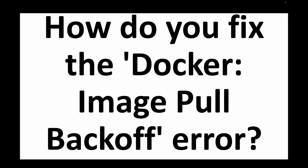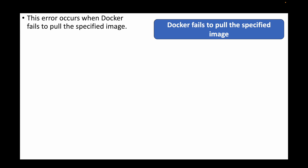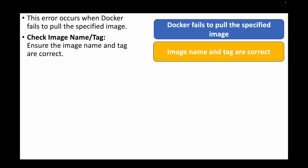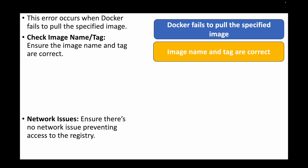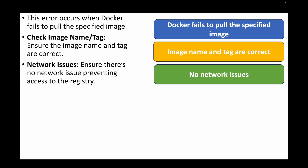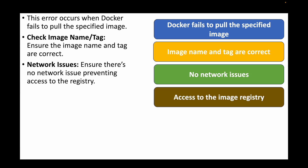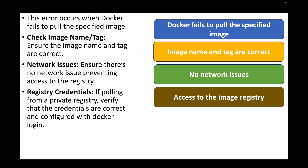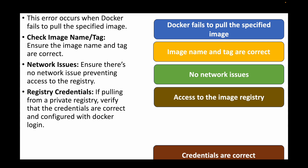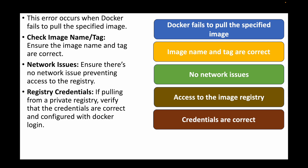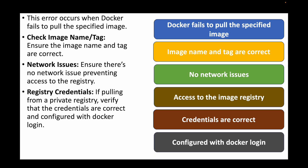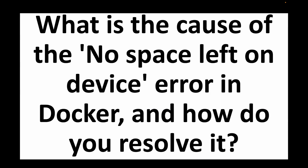The next question is: how do you fix the 'Docker image pull backoff' error? This error occurs when Docker is not able to pull the specified image — either it can't find the image or there's a network issue. First, check that you are giving the right image name and tag. Ensure there are no network issues preventing access to the image registry. Also verify that the credentials are correct and configured with your `docker login`, especially when pulling from a private registry.